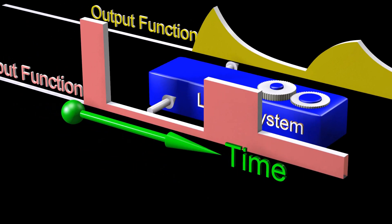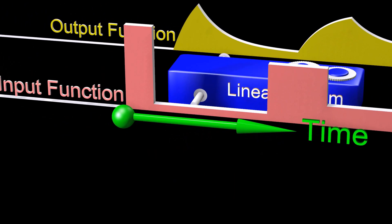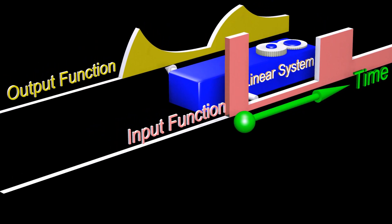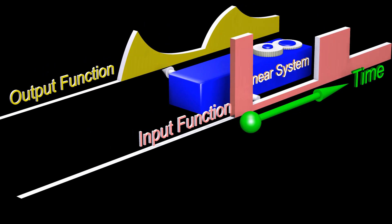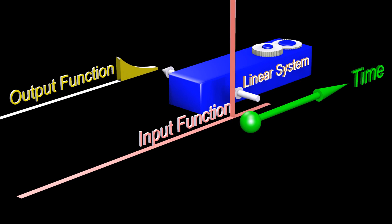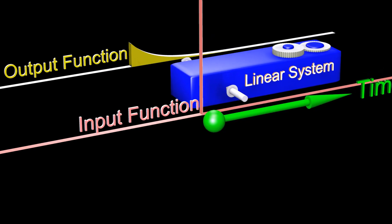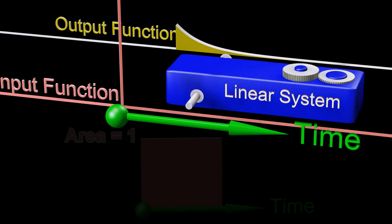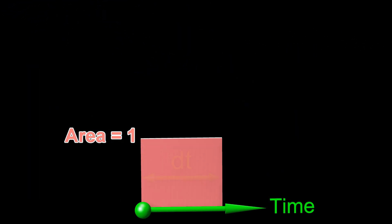This means that to know the system's response to any input, we only need to know its response to an input consisting of a unit impulse. A unit impulse is a function with an area exactly equal to one and a width which approaches zero.